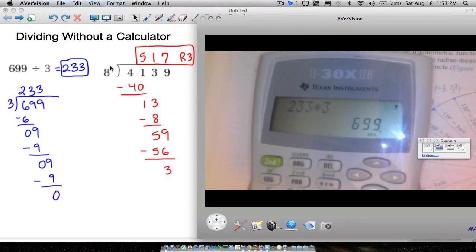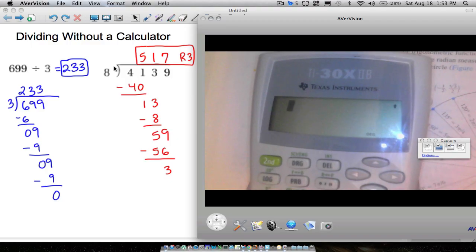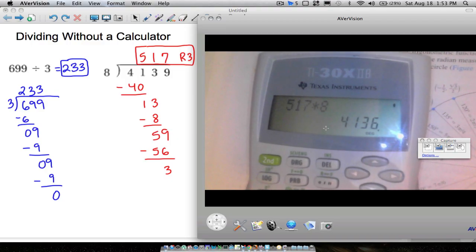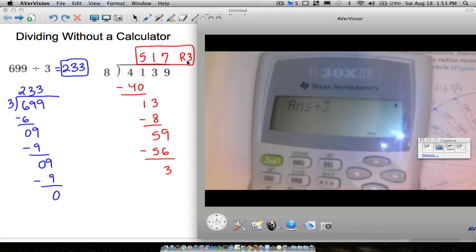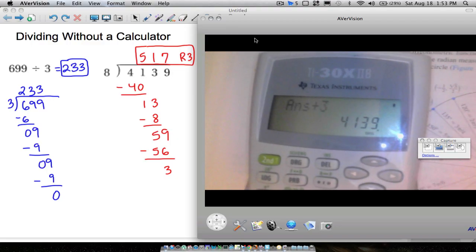All right. This next problem, take the outside numbers, 517 times 8. Let's do that real quick. And notice we get 4,136. The remainder of 3 means you want to add 3 to that number. And notice we do get that inside number, 4,139.